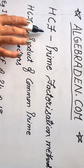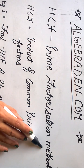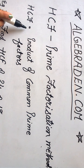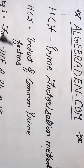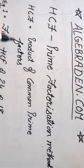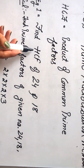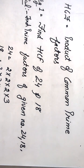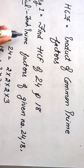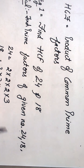Calculate HCF by prime factorization method. HCF is equal to the product of common prime factors. To understand this, let's have an example. Find HCF of 24 and 18. For the solution, find the prime factors of the given numbers 24 and 18.